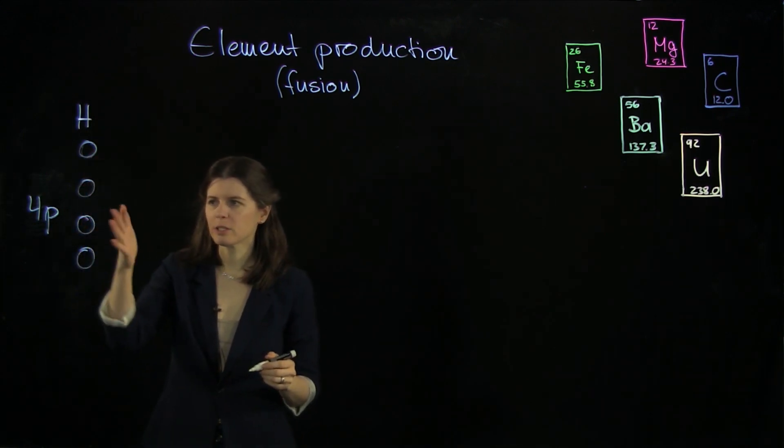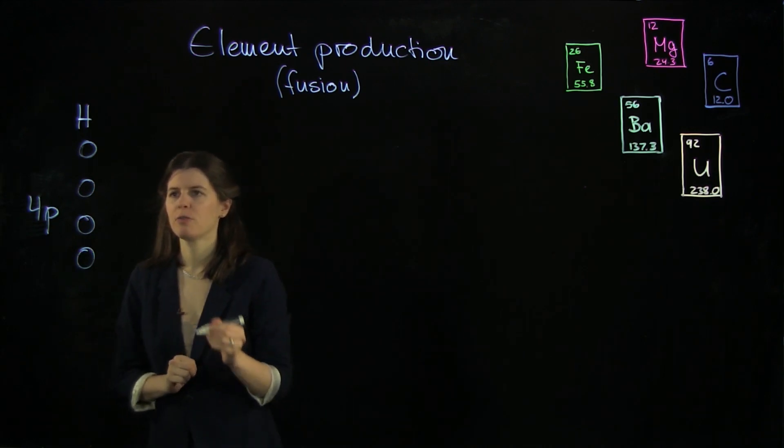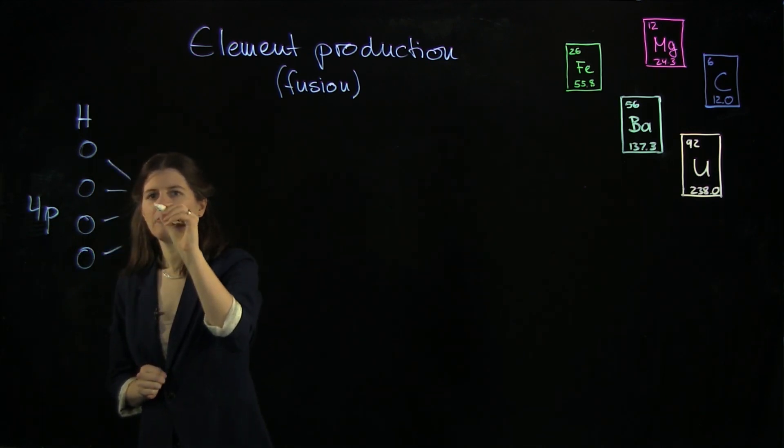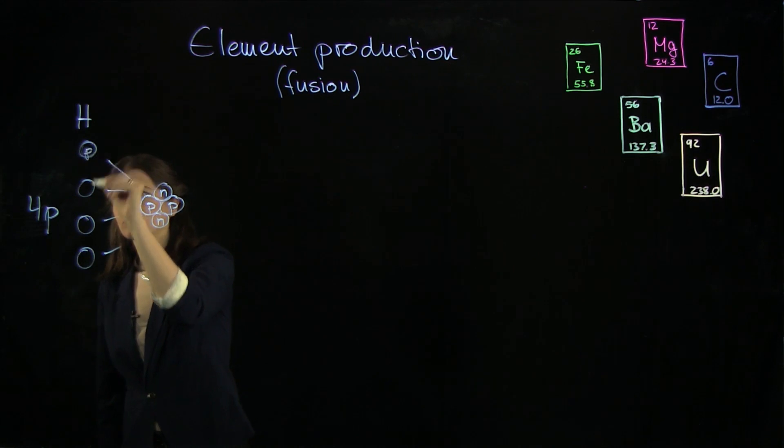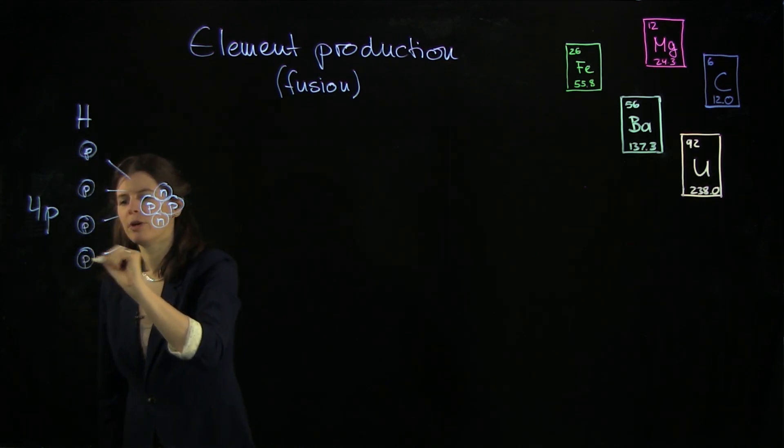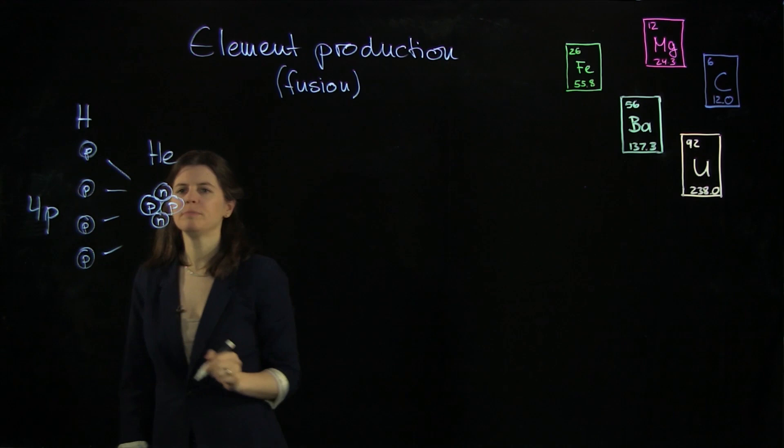come together in a series of steps that we're going to leave out for now and they form a helium atom. And that's made from two protons and two neutrons. So we have some conversion of our protons here into neutrons. One helium.